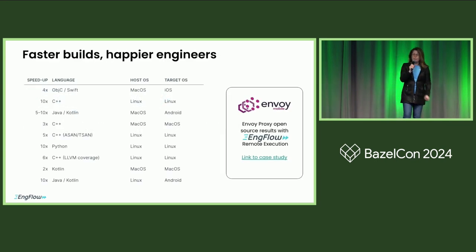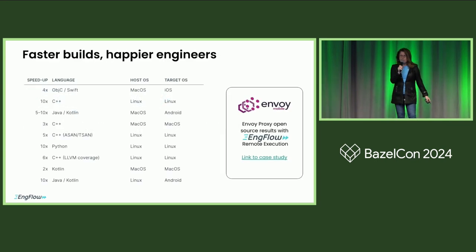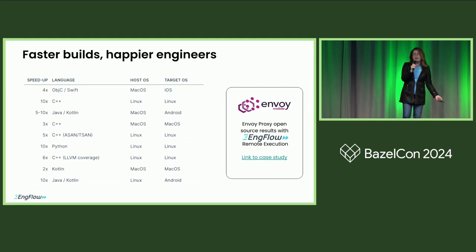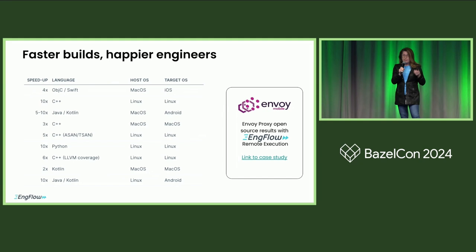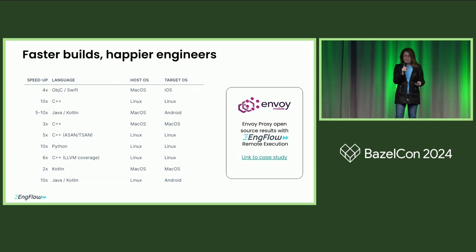With Bazel remote caching and remote execution, you can see how companies are able to get their builds faster. Faster builds means less compute needed, so better in terms of cost.